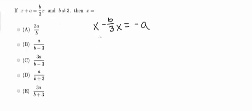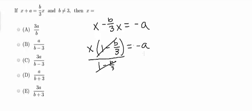So moving on from here, I'm going to go ahead and factor out an x from the left hand side. So I'm going to get x times 1 minus b over 3 is equal to negative a. Now, I'm going to go ahead and divide by 1 minus b over 3 on both sides. So 1 minus b over 3, that's going to cancel out. Over here, I'm going to have 1 minus b over 3.